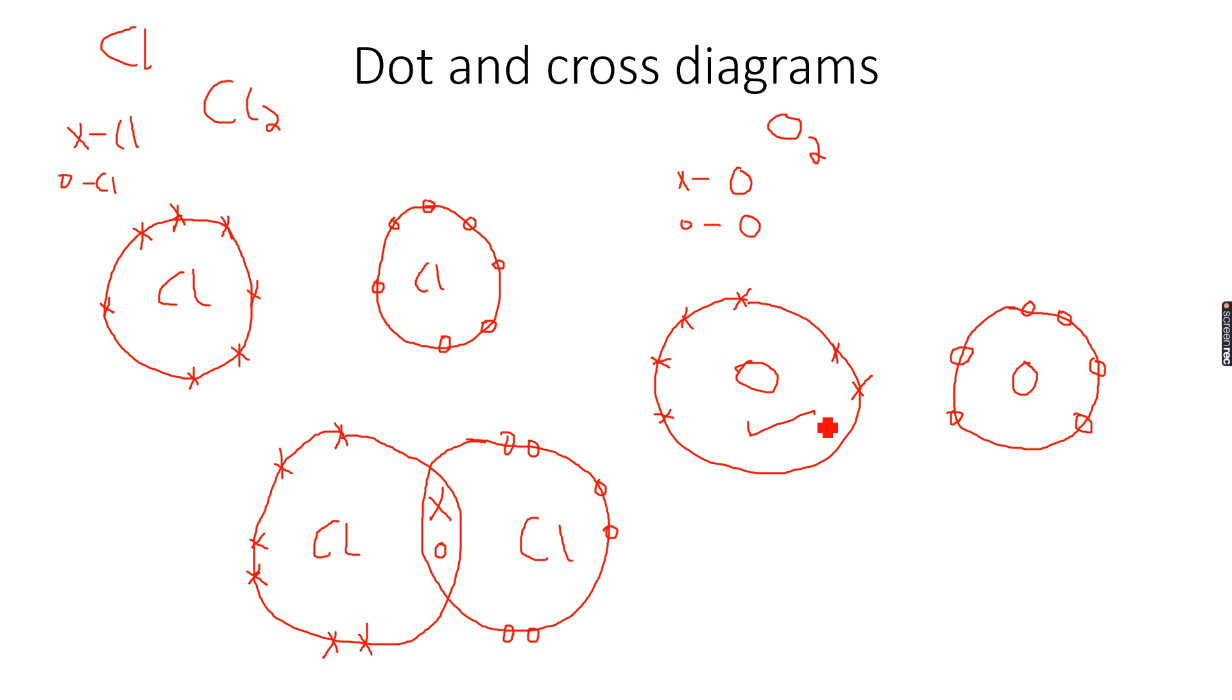Now you can see this needs to, this needs to, to complete it. Two electrons. So they will share two pairs of electrons. Now let's see how that looks like. They will share two pairs of electrons.